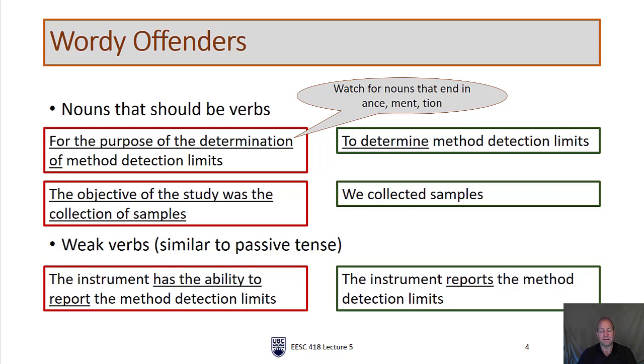So 'the objective of this study was the collection of samples'—we collected samples. Much more concise. We're saying pretty much the same thing. Often when people say 'the objective of some study was to do something,' they could easily have just said 'we did this' or 'we did that.' Rather than simply removing words, we can rephrase the sentence and give a more direct statement. This comes to the topic of weak verbs, which are similar to the passive tense, although it's not exactly the same.